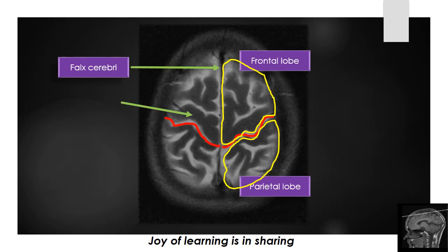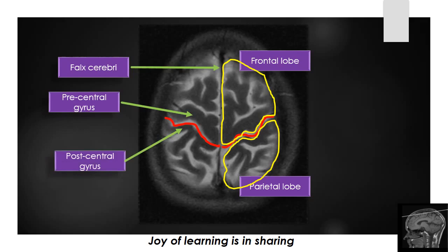The gyrus situated in front of the central sulcus is called the precentral gyrus, which is the primary motor cortex. The gyrus situated behind the central sulcus is the postcentral gyrus, which is the primary sensory cortex.